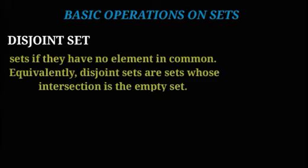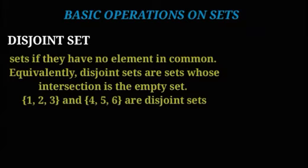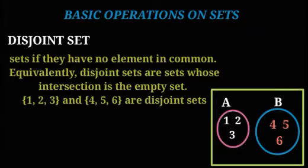Disjoint sets: two sets are disjoint if they have no elements in common. Equivalently, disjoint sets are sets whose intersection is the empty set. For example, one set is {1, 2, 3} and another set is {4, 5, 6} — these are disjoint sets.